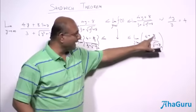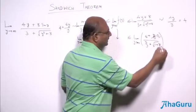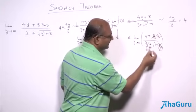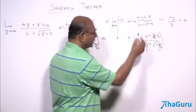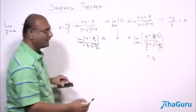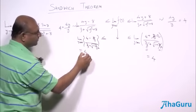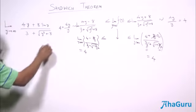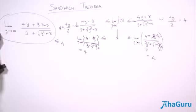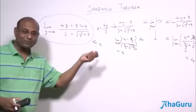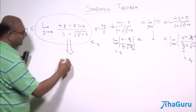When y becomes very large, 8/y → 0, 3/y → 0, and 8/y² → 0. So the denominator becomes √1 = 1, and the numerator becomes 4. So both bounds give limit = 4. Since f(y)'s limit is less than or equal to 4 and greater than or equal to 4, the only number satisfying that is 4. Therefore, this limit equals 4.